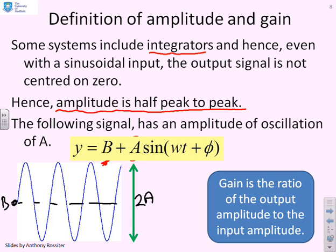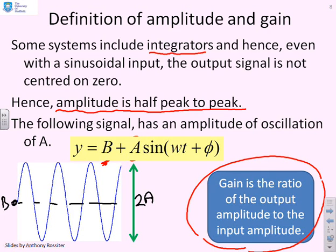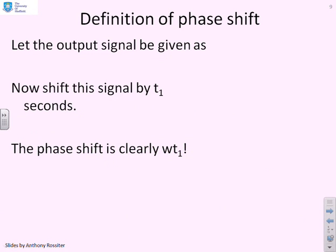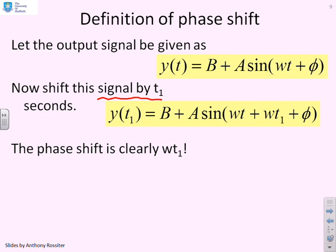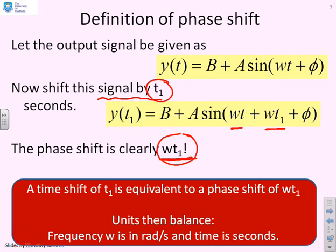The gain is the ratio of the output amplitude to the input amplitude. For convenience we often choose inputs to have an amplitude of 1. For the phase shift: if the output is y = b + A·sin(ωt + φ) and we shift the signal by t₁ seconds, we get an ω·t and an ω·t₁ term, so the phase shift is ω·t₁. A time shift of t₁ seconds is equivalent to a phase shift of ω·t₁ radians — the units balance because ω is in rad/s multiplied by seconds gives radians.